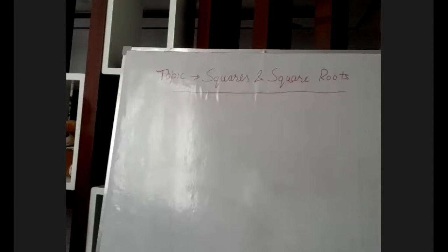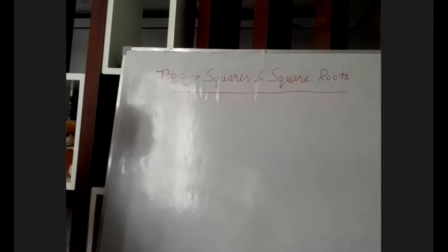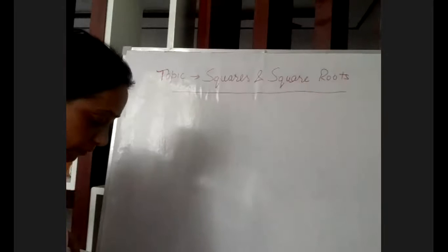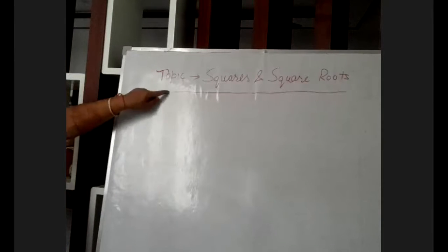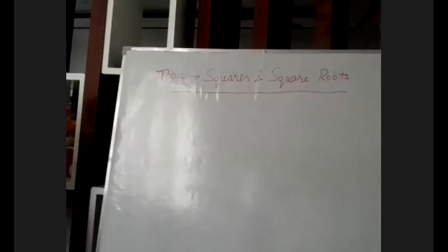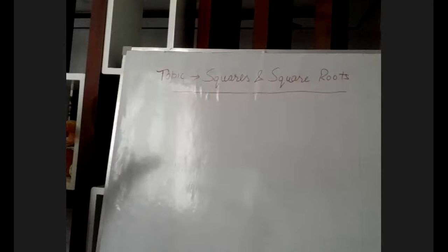Next, what is a perfect square? A perfect square can always be expressed as the product of equal prime factors. When we want to find the square of any number, we find all prime factors of that number, then we make pairs, then we find if this number is a perfect square or not. These points and exercise 3.1 we've already discussed in previous lectures.